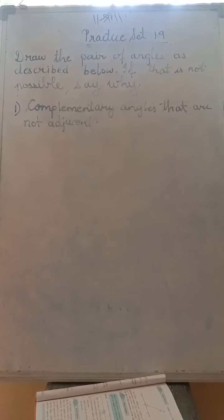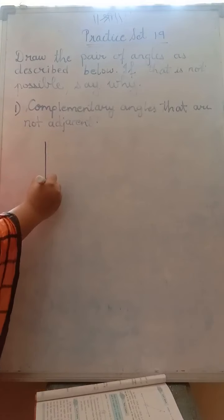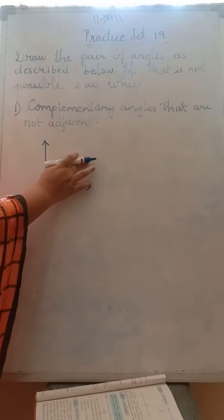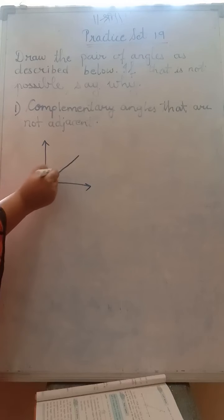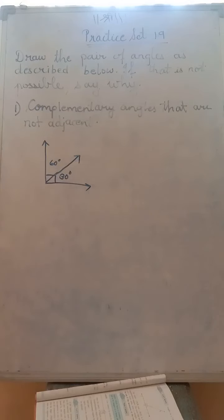Now we will begin with Practice Set 19. The question is: draw the pairs of angles as described below. If that is not possible, say why. The first description is complementary angles that are not adjacent. First of all, recall that the measurement of complementary angles is 90 degrees. You can show two angles — suppose one is 30 degrees, then the other will be 60 degrees. So these two angles are complementary because their addition is 90 degrees.